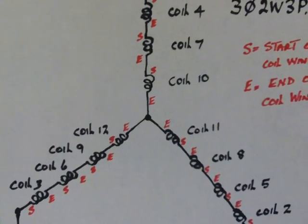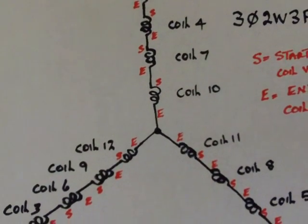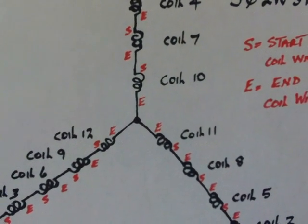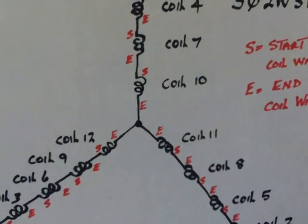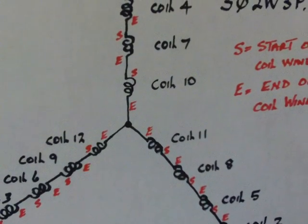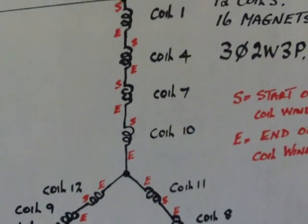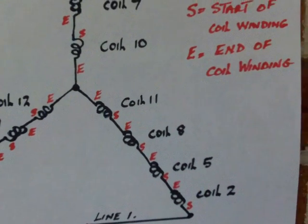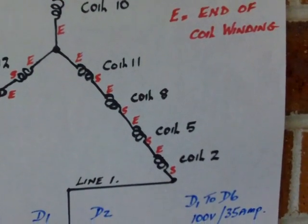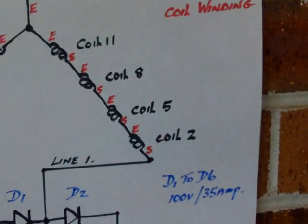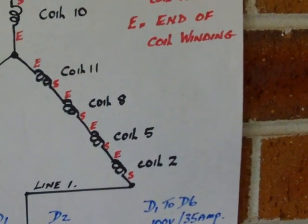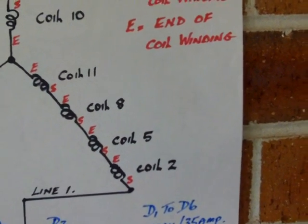If you have a look we have numbered the coils 1 to 12, the last 3 in that series coils 10, 11 and 12. The end wiring are connected and that is the center of our star. It gives us 3 legs: we go coil 11, 3 down from that is coil 8, another 3 down is coil 5, another 3 is coil 2. Notice the start goes to an end to a start to an end.